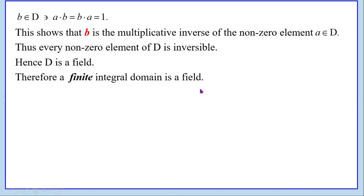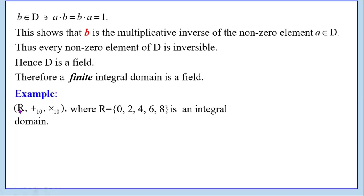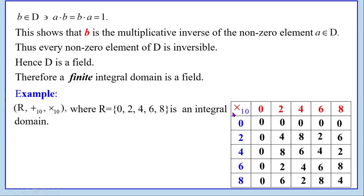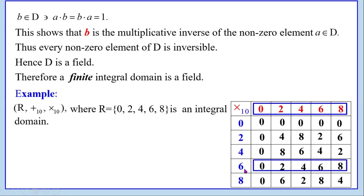Therefore, a finite integral domain is a field. For example, the algebraic structure (R, addition modulo 10, multiplication modulo 10) where R = {0, 2, 4, 6, 8} is an integral domain. Looking at the multiplication table, the row headed by 6 contains the elements 0, 2, 4, 6, 8 — exactly the same as the top row — therefore 6 is the unity element of R.